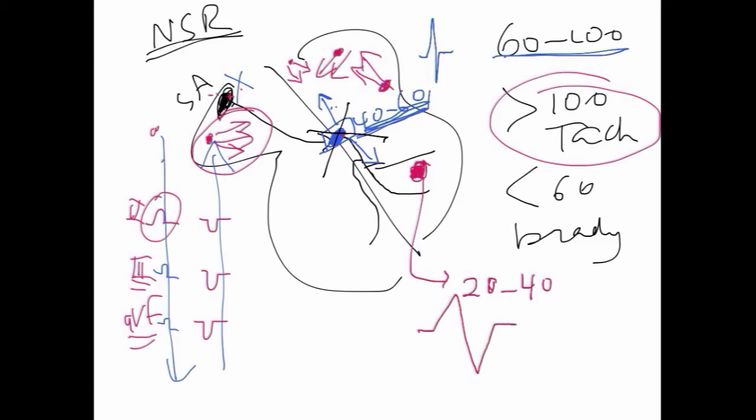These would be like wide QRSs, because they're coming from the ventricle. Anything that does not go through the normal conduction will give you a wide complex.